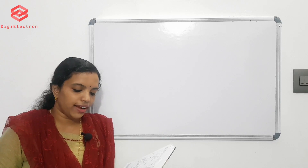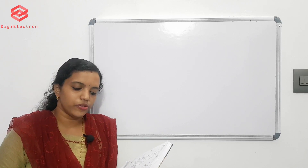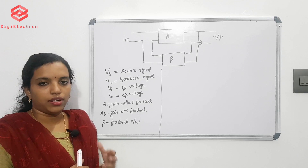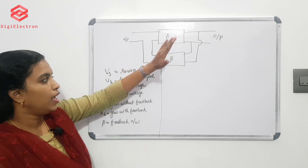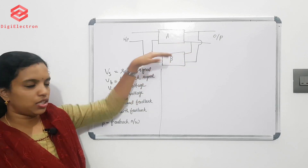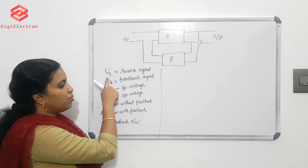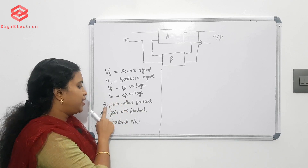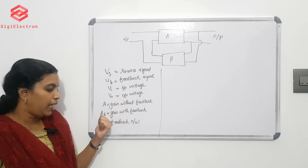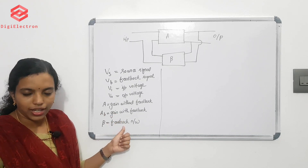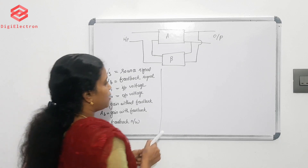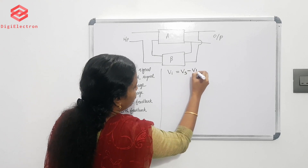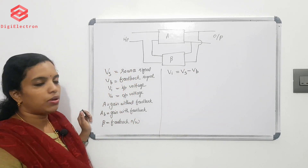Next question: derive the expression for gain of a negative feedback amplifier. We have a circuit with a feedback section. Vs is the source signal, Vb is the feedback signal, Vi is the input voltage, V0 is the output voltage, A is the gain without feedback, and beta is the feedback factor. The source signal equals the input voltage minus the feedback voltage.